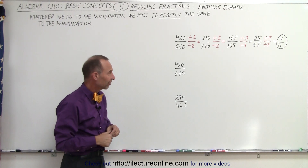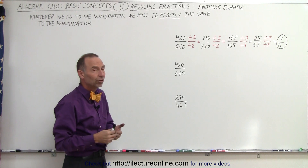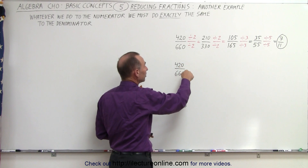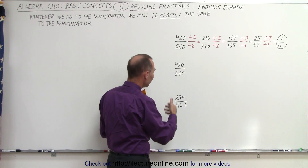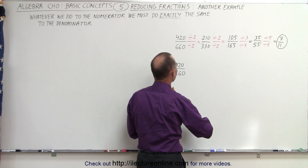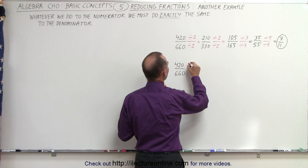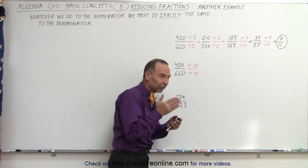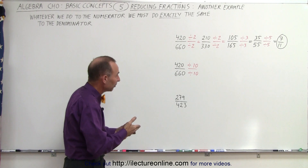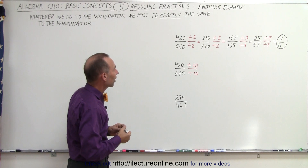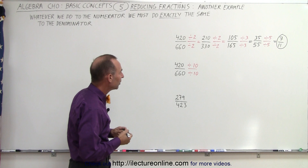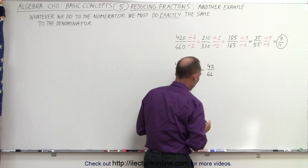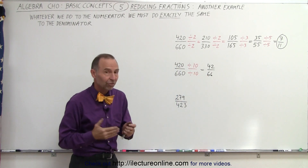Why do we have that same fraction a second time? Because we can actually do this in a slightly smarter way. Since both the numerator and the denominator end in 0, we can divide both by 10 and reduce much more quickly. So divide both numerator and denominator by 10, and this becomes 42 divided by 66. Now we have a much easier task at hand since the numbers are smaller.